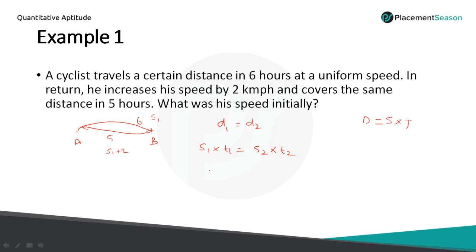We don't know S1. S1 into time taken is 6 hours, which equals S2 — that is S1 plus 2 — into the time taken of 5. Simplifying: 6S1 equals 5S1 plus 10. So S1 equals 10. It means the initial speed is 10 km per hour.